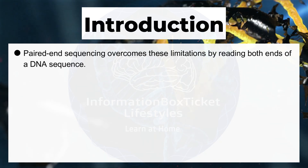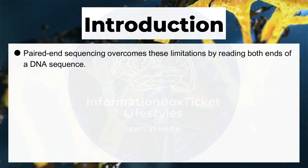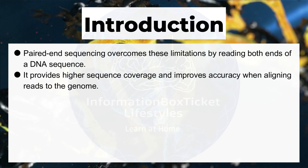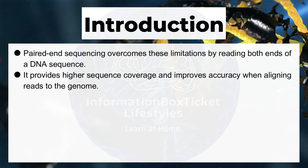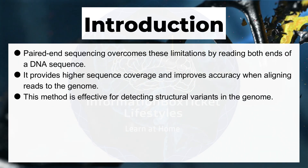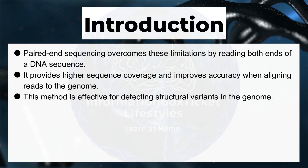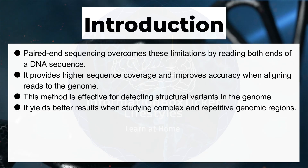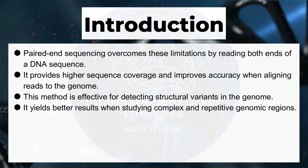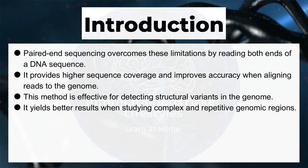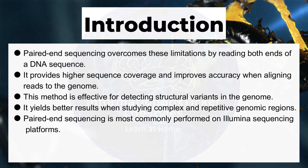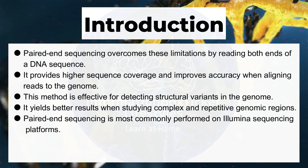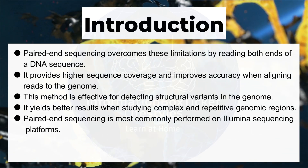but struggles with accurately sequencing longer DNA fragments and repetitive sequences. Paired end sequencing overcomes these limitations by reading both ends of a DNA sequence. It provides higher sequence coverage and improves accuracy when aligning reads to the genome. This method is effective for detecting structural variance in the genome, and yields better results when studying complex and repetitive genomic regions. Paired end sequencing is most commonly performed on Illumina sequencing platforms.